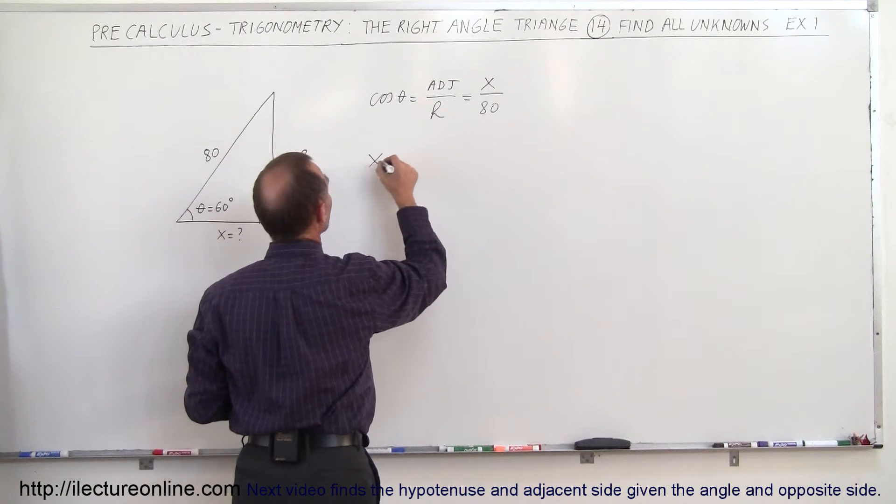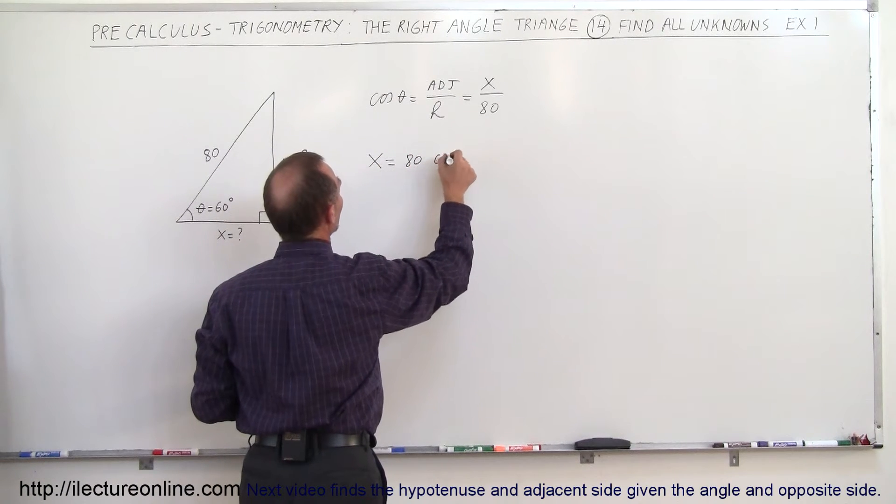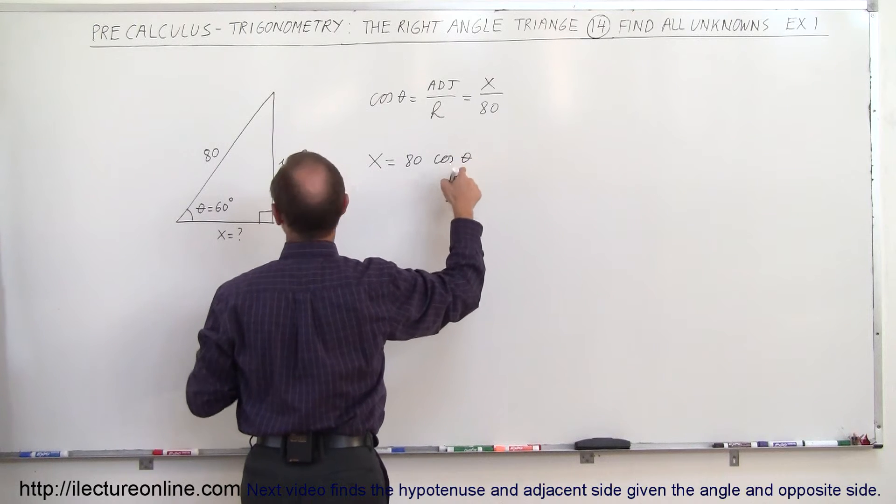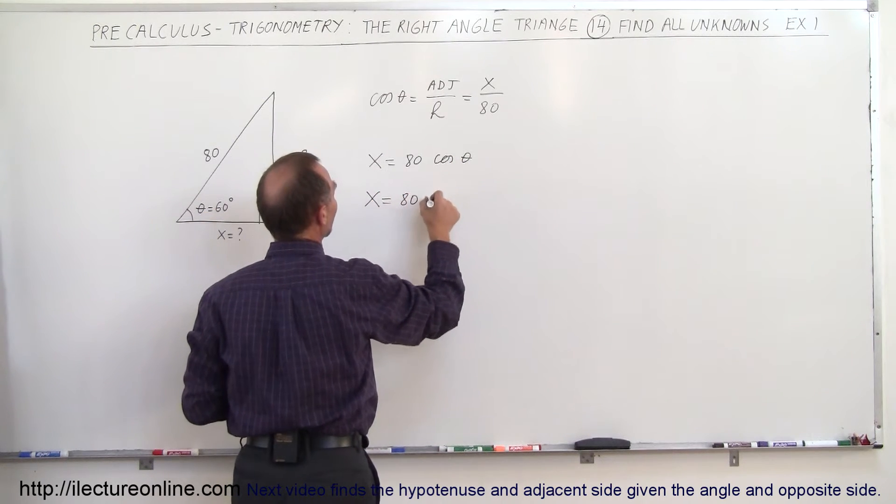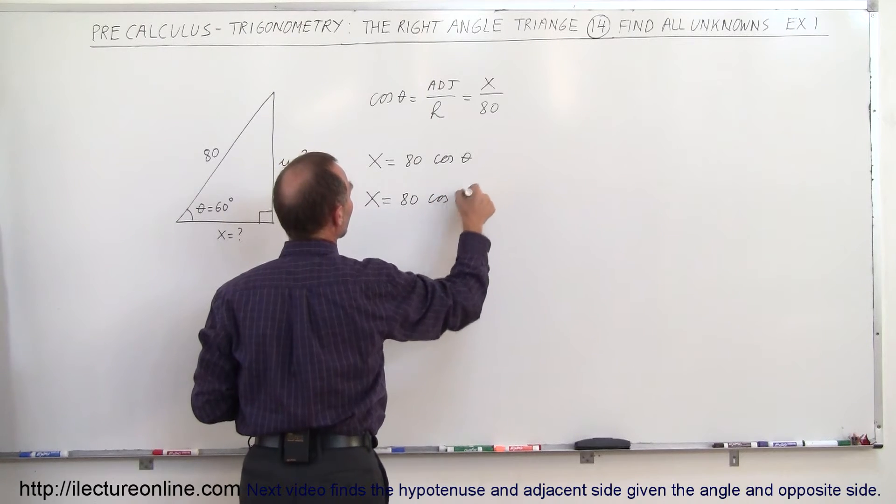We can say that x is equal to 80 times the cosine of theta. And since theta is given to be 60 degrees, x is equal to 80 times the cosine of 60 degrees.